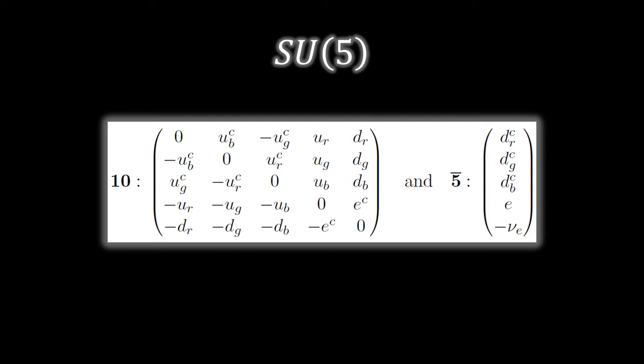Under the SU(5) transformations, the quarks and leptons are supposed to transform into each other, or the quarks and leptons are supposed to furnish representations of SU(5).